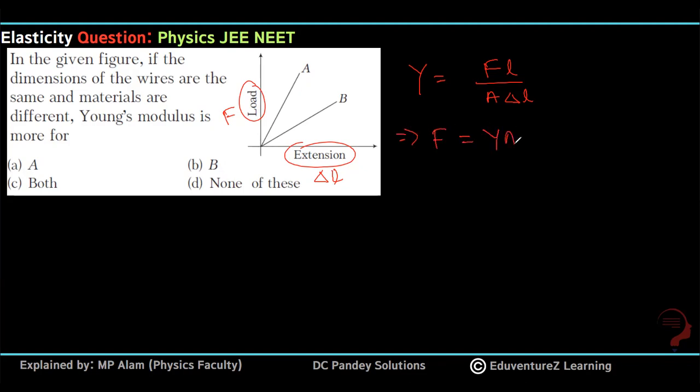YA by L into delta L, cross multiplication of this value. Force and delta L are directly proportional because this value we are using is slope, and this is slope.